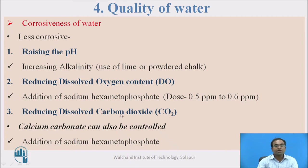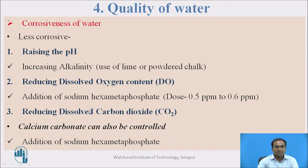The third approach is reducing the dissolved carbon dioxide. By decreasing the dissolved carbon dioxide, calcium carbonate can also be controlled. When we decrease the carbon dioxide, automatically ferrous bicarbonate will not form, and after that ferric hydroxide will not form. So by decreasing the dissolved carbon dioxide, we can stop the corrosion process at a very rapid rate. This is also done by adding sodium metaphosphate.